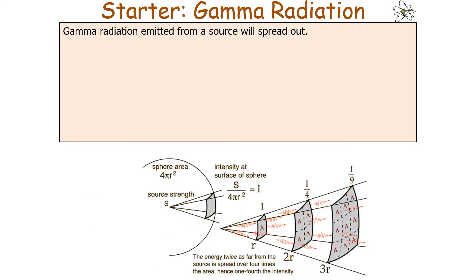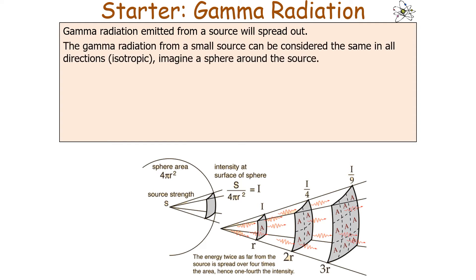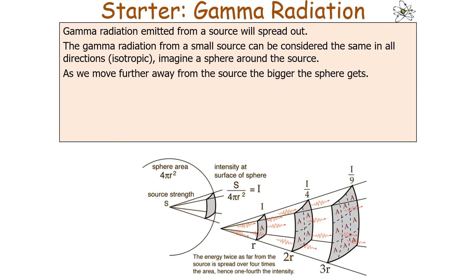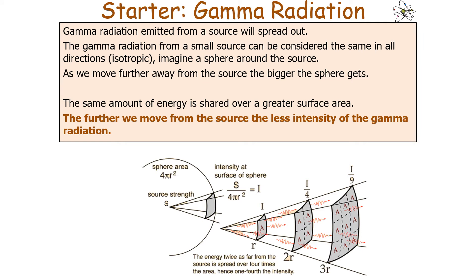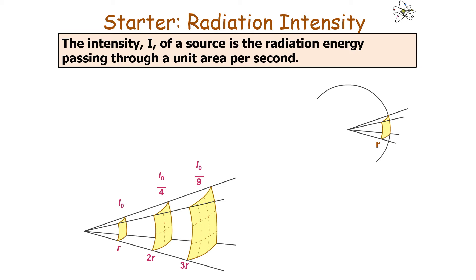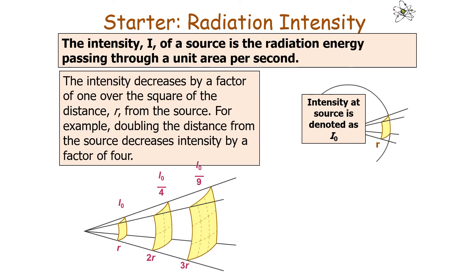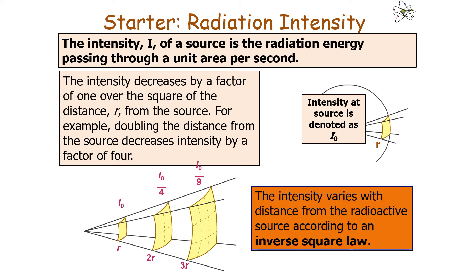To summarise: gamma radiation emitted from a source will spread out. The gamma radiation from a small source can be considered the same in all directions — it's isotropic — so you can imagine a sphere around the source. As you move further away, the bigger the sphere gets, so the same amount of energy and photons is shared over a greater surface area, giving less intensity. The intensity I of a source is the radiation energy passing through a unit area per second. Doubling the distance decreases the intensity by a factor of 4; increasing distance by a factor of 3 decreases intensity by a factor of 9.